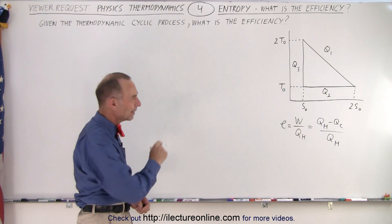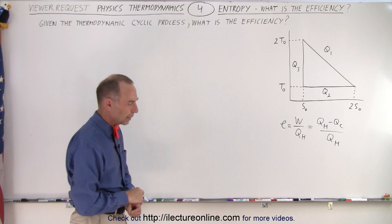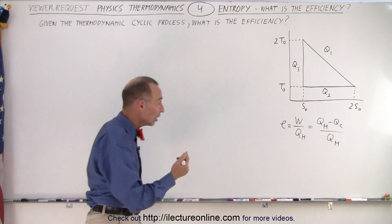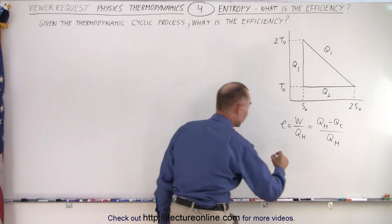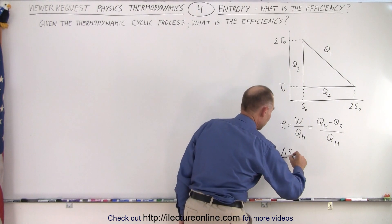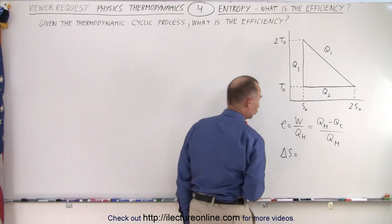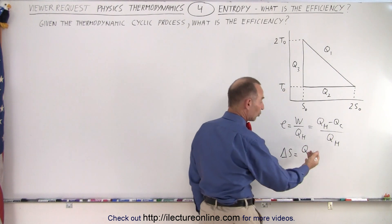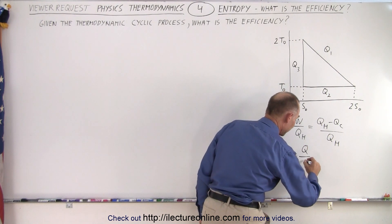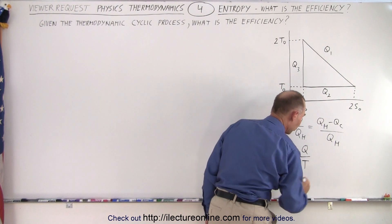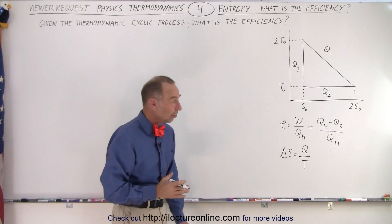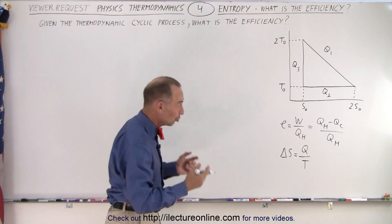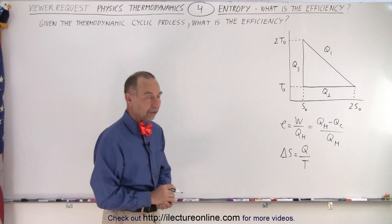So how do we do that on that particular diagram? We also have to go to the definition of the change in entropy. We know that the change in entropy is equal to the heat added or taken away from the gas divided by the temperature over which this happens. We could also take the average temperature if the temperature changes during that process.